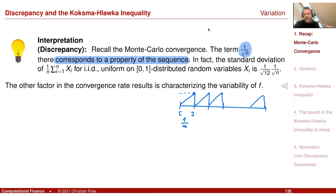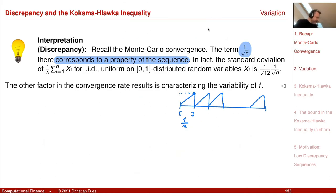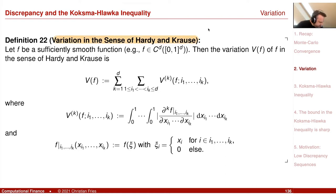It looked as if we had convergence of one divided by n. The standard deviation of a uniform distributed sequence is one divided by square root of n, and that is the convergence rate. For this deterministic sequence, we saw a better rate. But to carry over this result, I now need something that characterizes the variability of the function, and that definition is the variation in the sense of Hardy and Krause, which is a generalization of the absolute value of the derivative to higher dimensions.